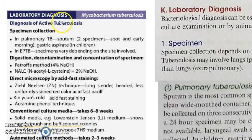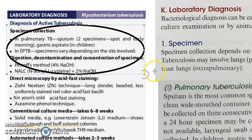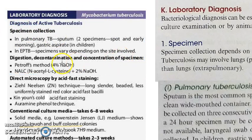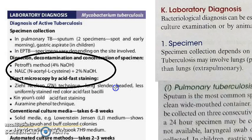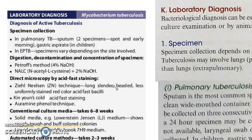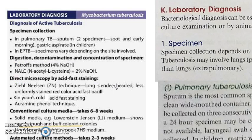Now let us revise what we have seen. Laboratory diagnosis of pulmonary tuberculosis: first we collect the specimen — that will be sputum, two specimens. Then for digestion, decontamination, and concentration, we use Petroff's method and NALC — that is N-acetyl-L-cysteine with 2% NaOH.